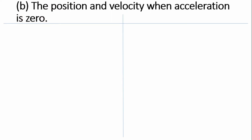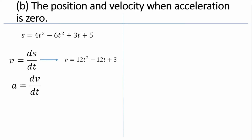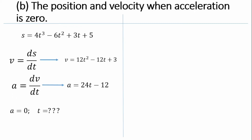Next, we are asked to find the position and velocity when acceleration is zero. The word 'when' points to a time — we need to find the time at which acceleration equals zero, then substitute that time into our position and velocity equations to get the answers.